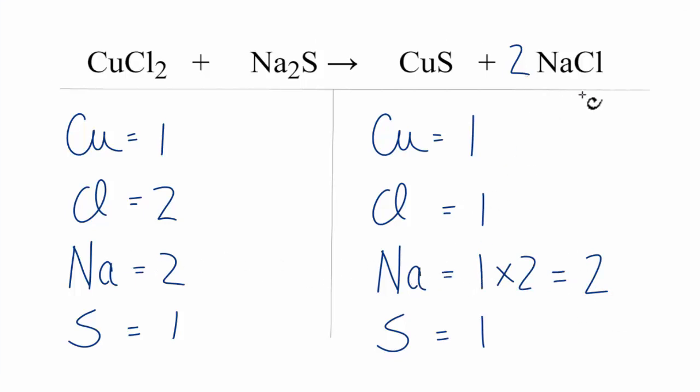And then because the 2 applies to everything, we have 1 chlorine times the 2. That'll give us 2. Now the chlorines are balanced, and everything is the same on both sides of the equation. This equation is balanced.